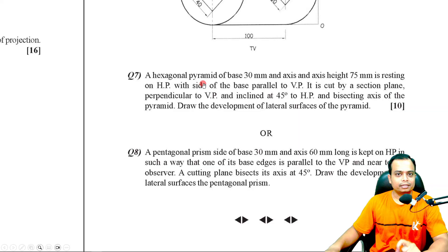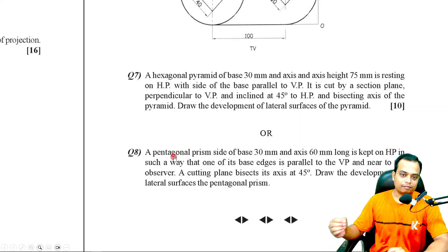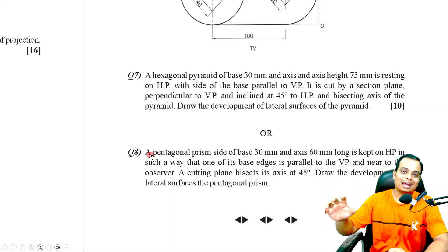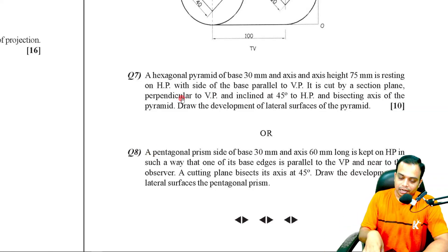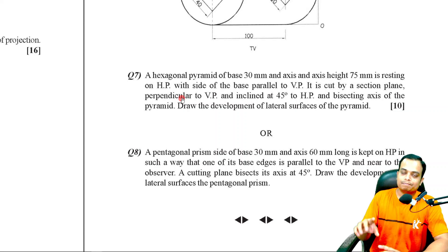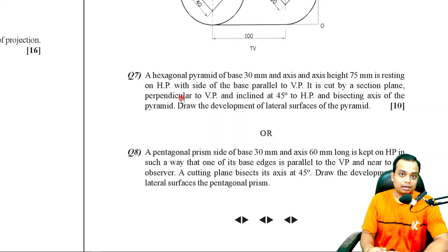This is based on a hexagonal pyramid, whereas the last problem is based on a pentagonal prism. Given a choice, you should go for problems based on the parallel line method because they are relatively easier than the radial method. In radial development you have cone and pyramid, whereas in parallel line development you have prism and cylinder, which are relatively easier to construct.